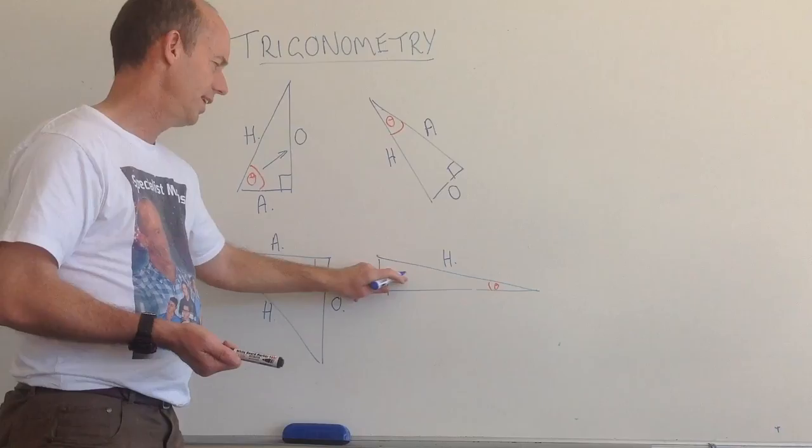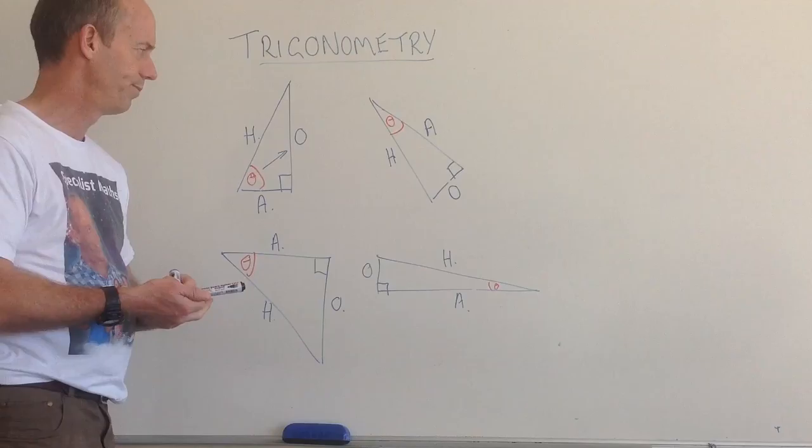And lastly, my long side for this one is here. So that's my hypotenuse. This is my angle that I'm interested in. So this is the side that's opposite the angle. This is the side that's adjacent to the angle.